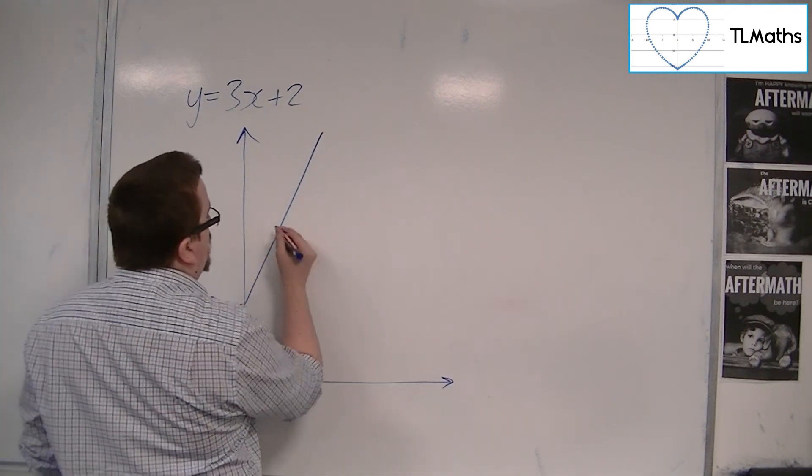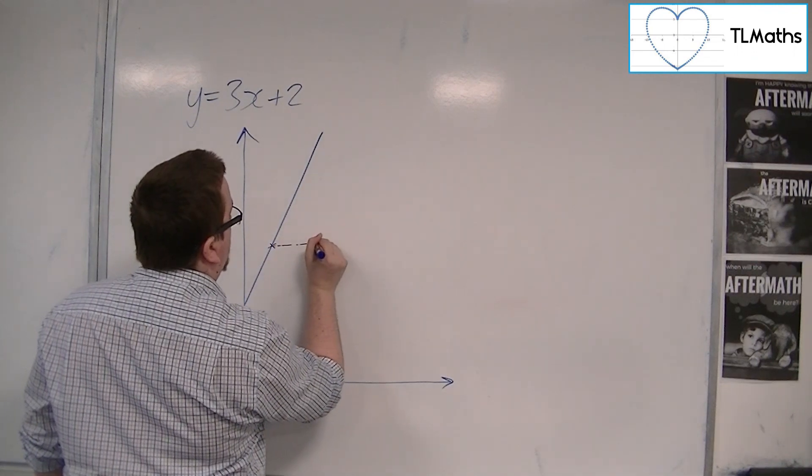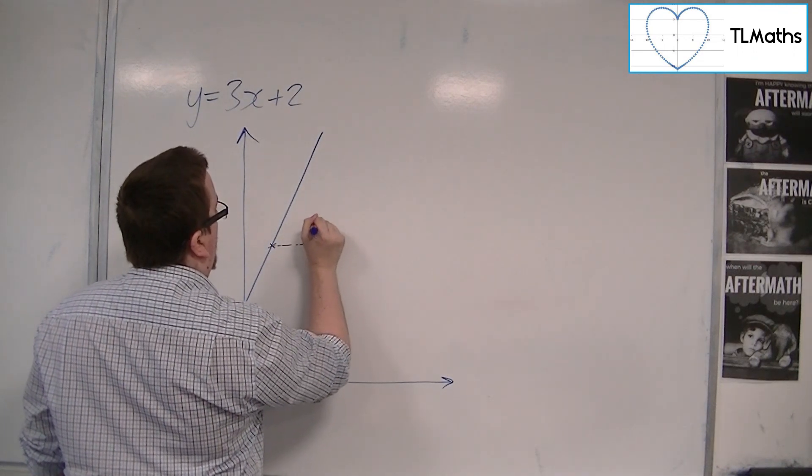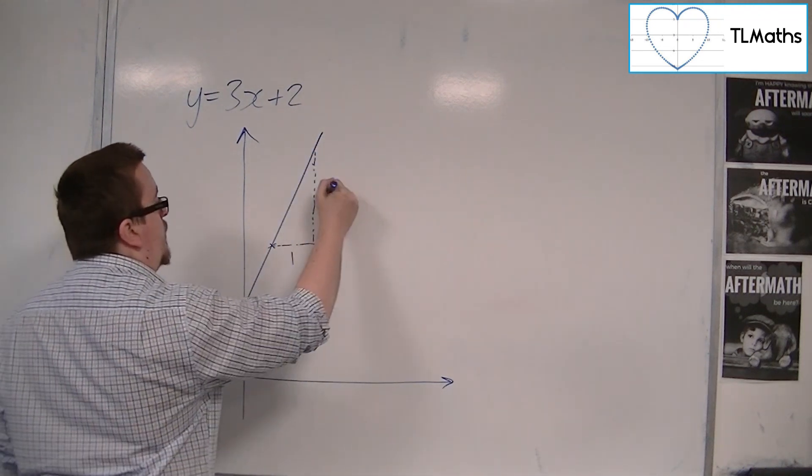Because if I just choose any point on the line, and I go one unit to the right, then effectively the line has moved up three units.